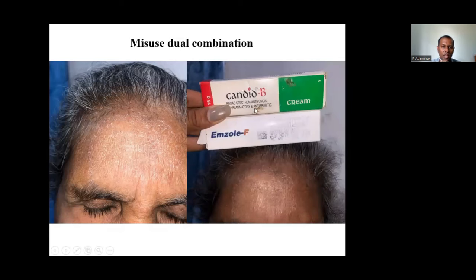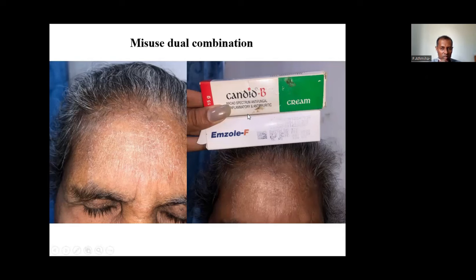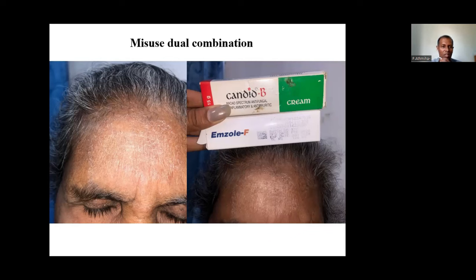Contact dermatitis can be caused by many things: earphones, cellphones, creams, hair dye, nickel, and many others. The first thing is to find the cause and remove it; otherwise it will recur. What is the problem here: a yellow crust — nasal carriers of staphylococcal infection develop impetigo around the nose. Treated with betamethasone and neomycin combination and clobetasol — two problems: no role for steroid in staphylococcal infection, and in children for adults on the face there is no point giving potent steroid like clobetasol or betamethasone.